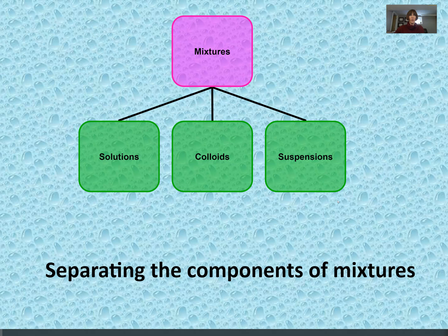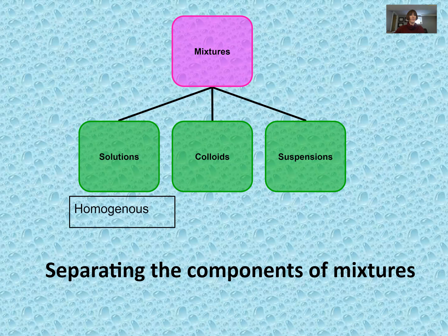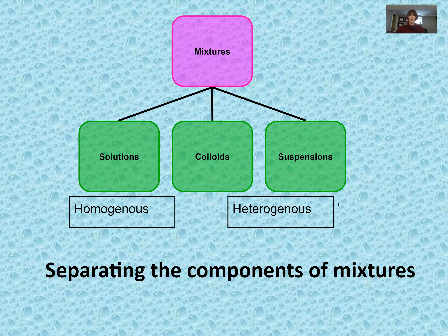Let's revisit the flow chart. We were talking about mixtures, and specifically when you have a homogeneous mixture we call that a solution, meaning all the particles within that solution are about the same size. For heterogeneous mixtures — colloids and suspensions — a colloid has small and medium particles, appears cloudy, and filtration does not work. A suspension has small, medium, and large particles, and the large particles allow a settling phenomenon to occur. We'll focus today on separating solutions and suspensions.